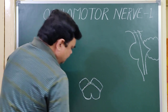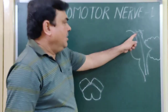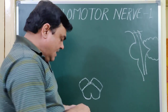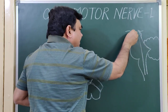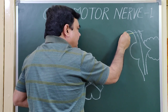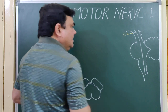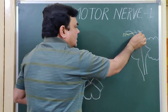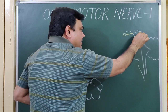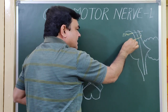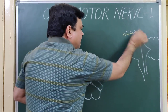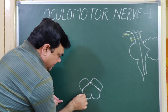This is a transverse section of the midbrain at the level of the superior colliculus. At this ventral side, the third cranial nerve arises. At the inferior colliculus level, the fourth cranial nerve arises from the dorsal aspect. This is the fourth cranial nerve.